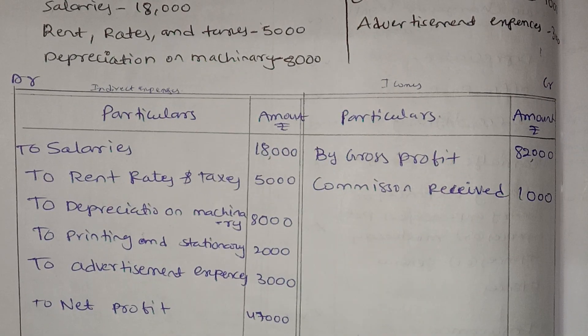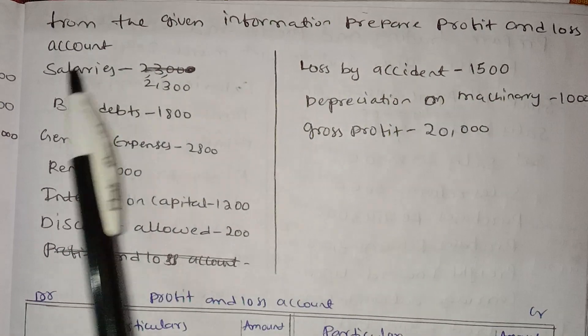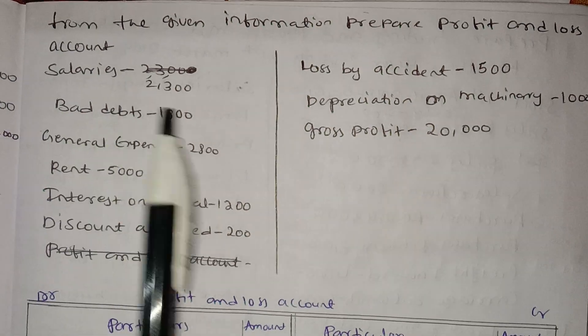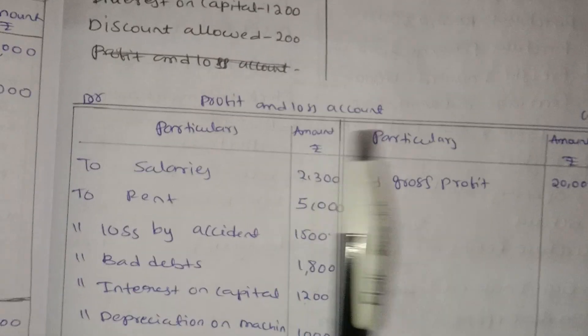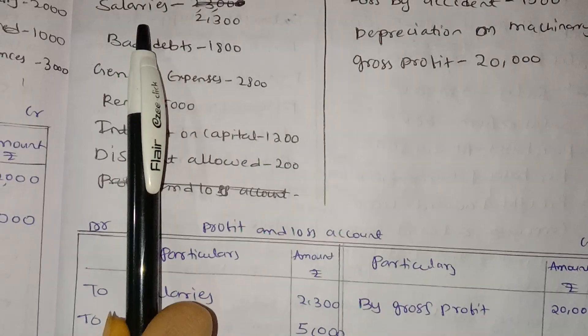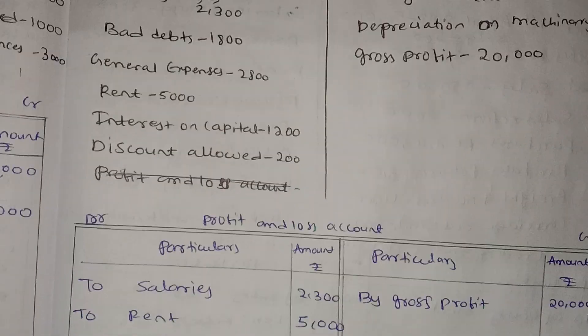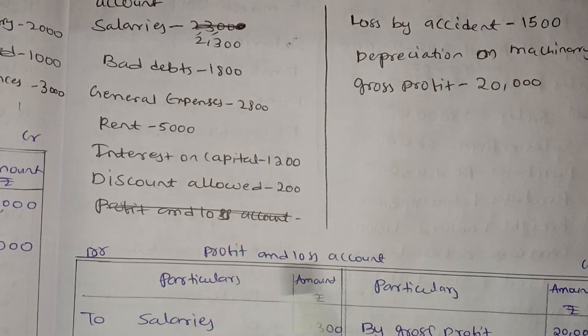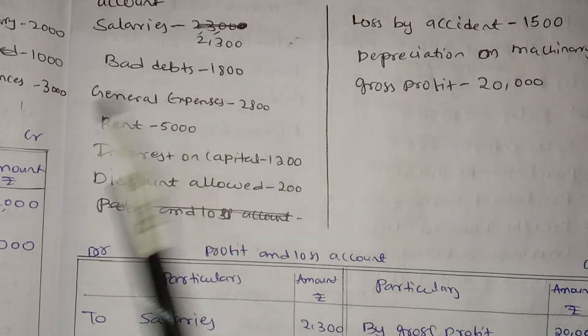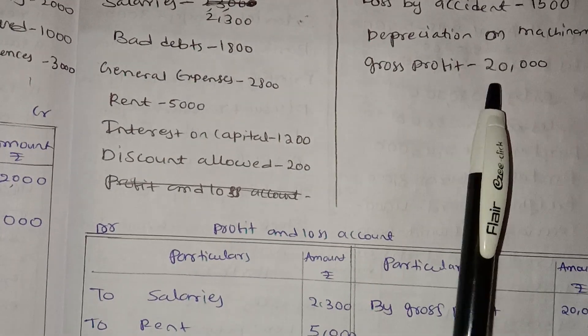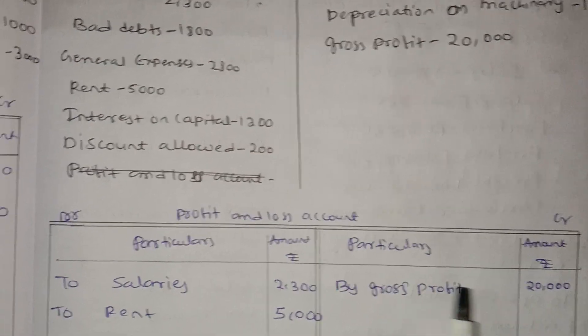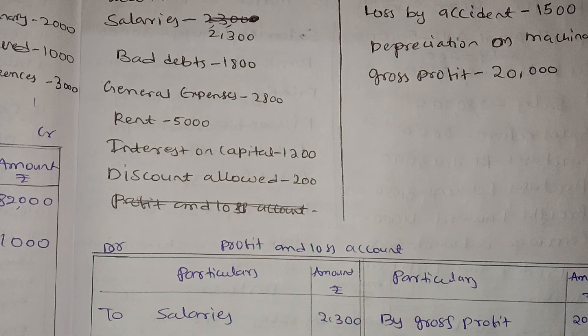Students, from the given information, prepare the profit and loss account. First we will find double lines in the middle. Particular, amount, debit side and credit side. First we will find salaries. By gross profit — gross profit is 20,000. Salary is 2,300.